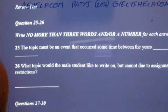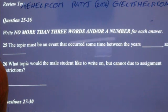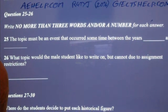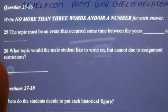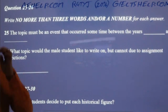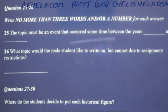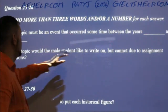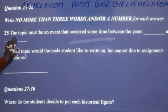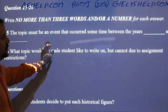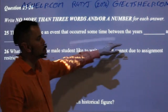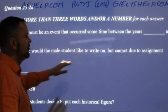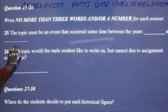Number 25: these were fill-in-the-blanks — no more than three words or a number for each answer. The topic must be an event that occurred sometime between the years blank and blank. So what were the answers?